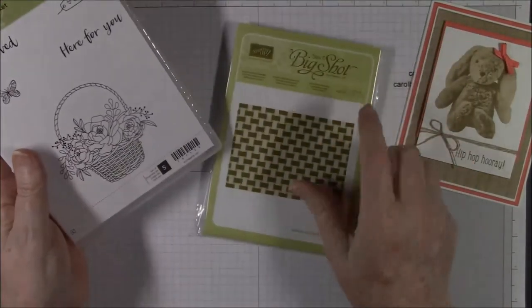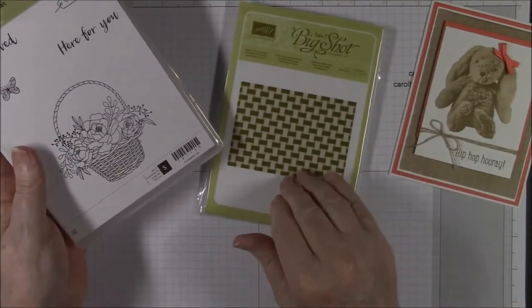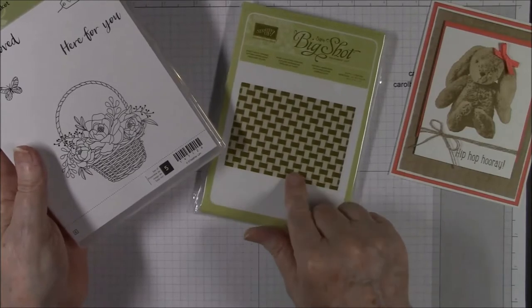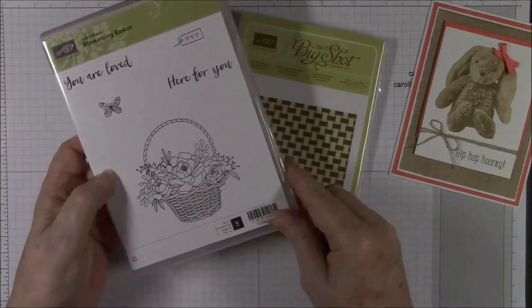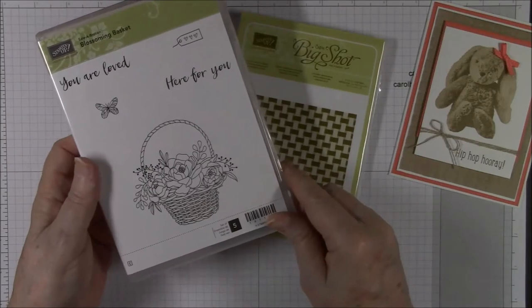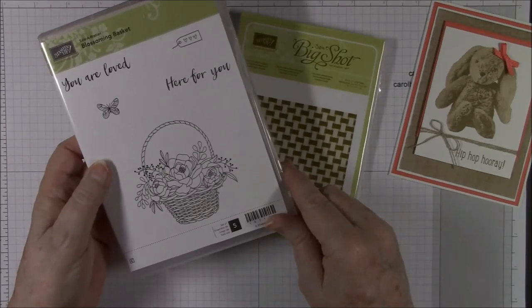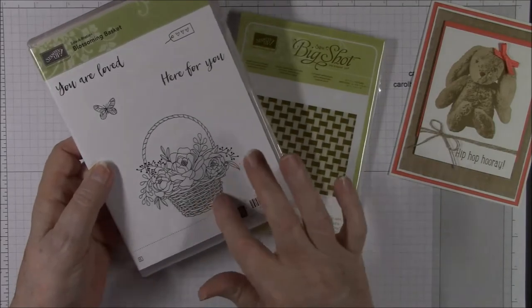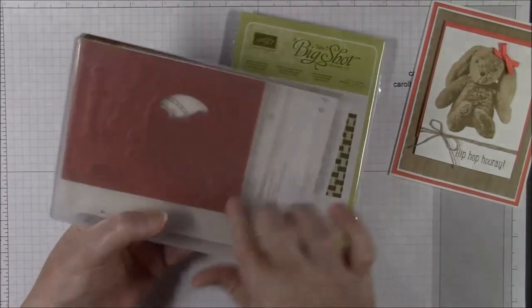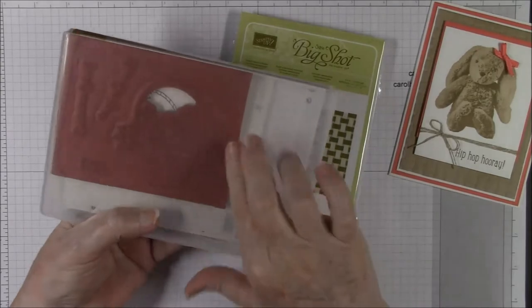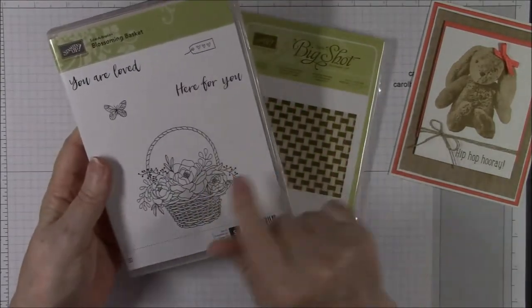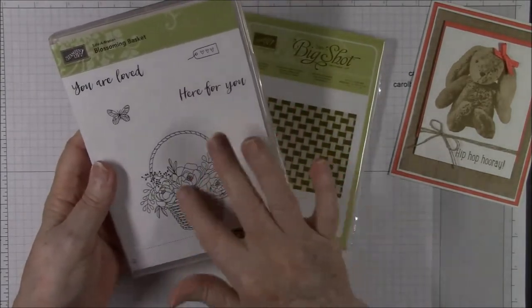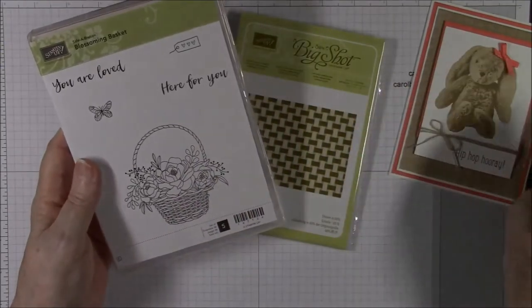And so now the folder will be carried over into the annual catalog, but the stamp set will, as far as I know, will not because it is a Sale-A-Bration item and usually they don't carry Sale-A-Bration items over. So if this is a stamp that you want, and it's a nice big basket here, I'll be doing an Easter card maybe tomorrow or the next day using this basket and very similar to this card.